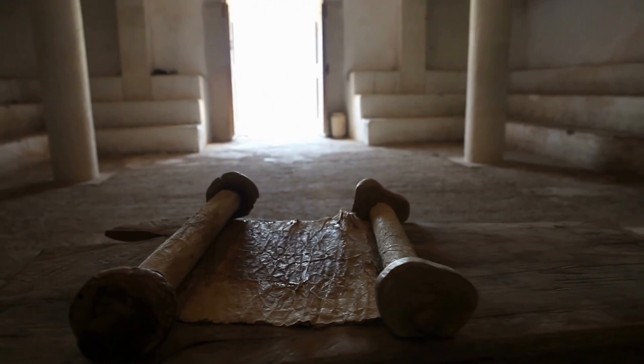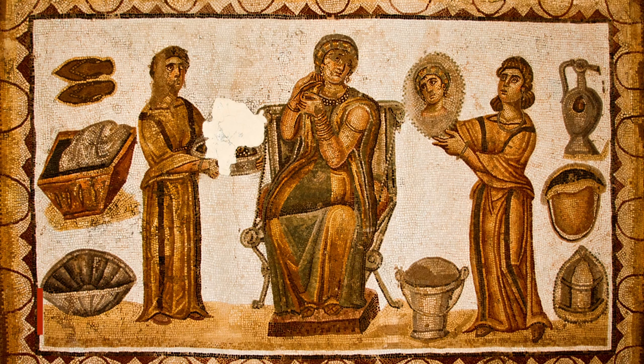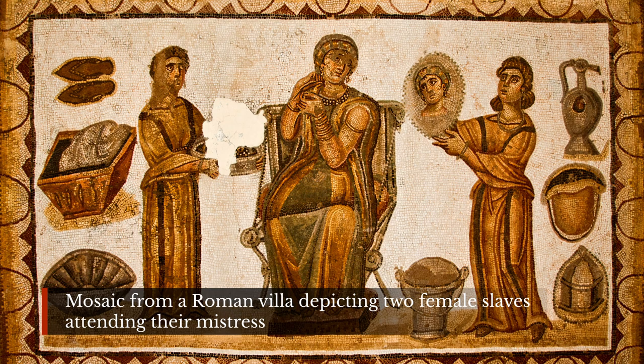A slave remained the property of his or her owner for life unless freed during the owner's lifetime, at the owner's death, or by managing to purchase their own freedom — which was rare as most slaves were not allowed to make or hold money. A freed slave usually took the first two names of their former master and could become a citizen, even owning slaves themselves. The children of freed female slaves had no limits placed on their civil rights, though they still bore the stigma of having a mother who had once been a slave.